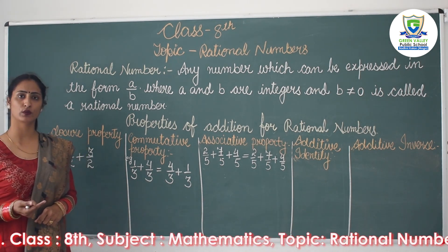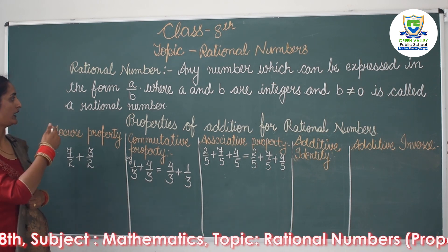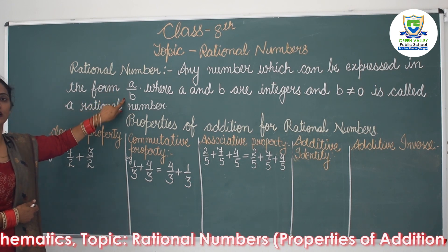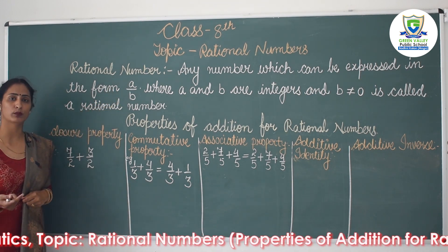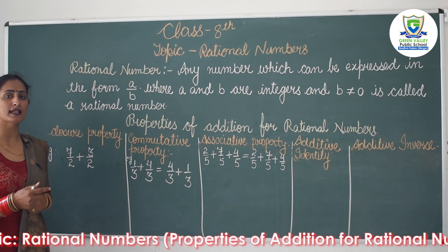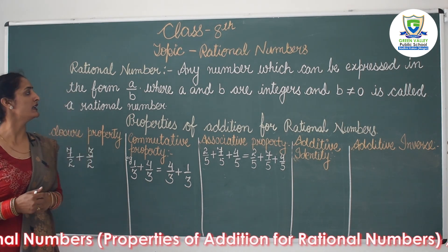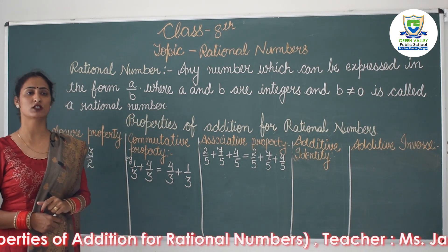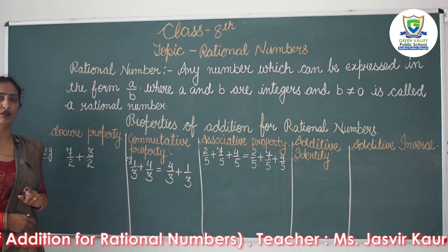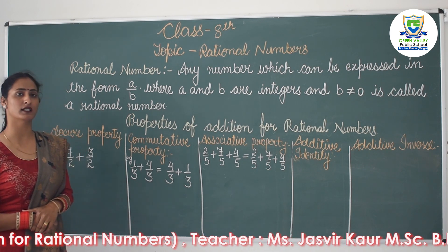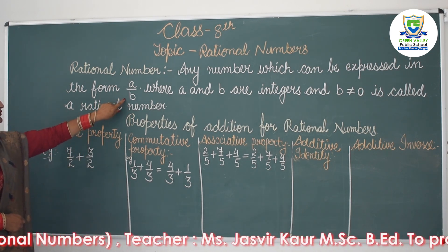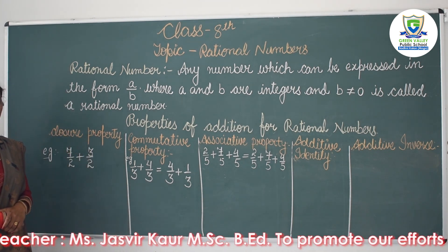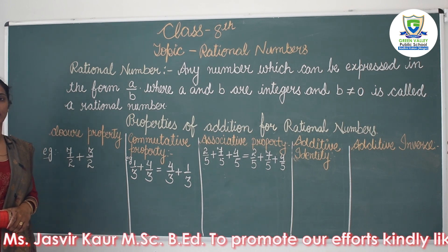It means any number which we can write in the form a over b — this is the numerator and this is the denominator. Any number which can be expressed as numerator over denominator is a rational number, and b is not equal to 0. The value of the denominator should never be 0. This is the most important condition, because if the denominator is 0 then the value is not definable — it becomes infinity, which is uncountable and does not exist.